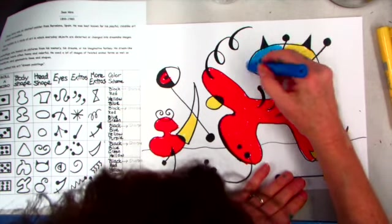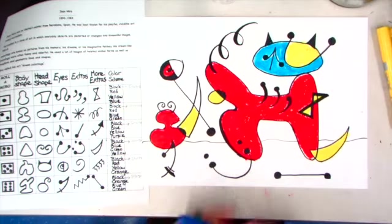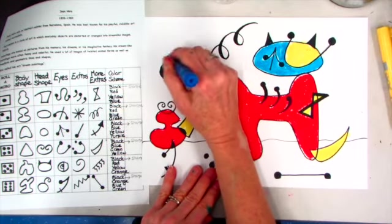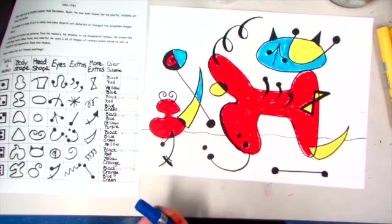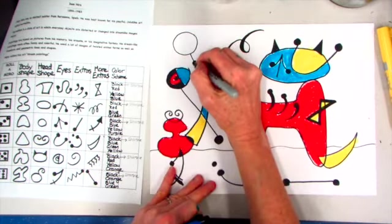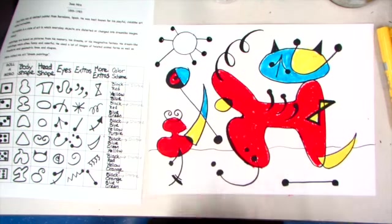Try to color neatly and carefully. And I think now I want to add one more shape. I'm adding a sun. And now I really feel like I have filled the whole page.